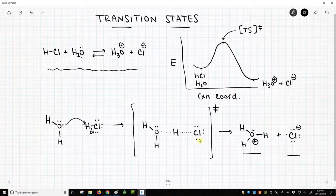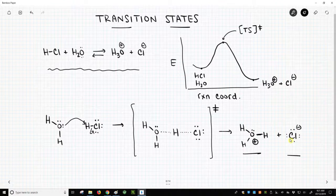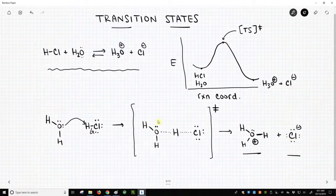So to complete this transition state, we also need to talk about charges. All the atoms on the left are neutral. The oxygen and chlorine on the right have charges. So in the transition state, they're going to have partial charges. And we denote that with a delta symbol.